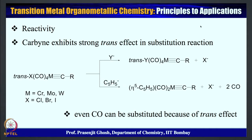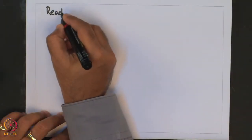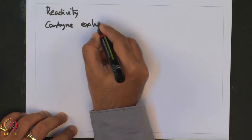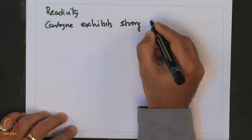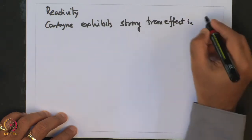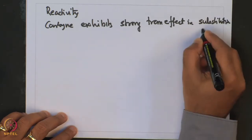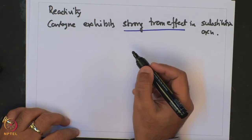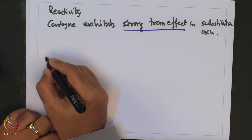Because of this, carbene exhibits extremely strong trans effects in substitution reactions. Trans effect means that a ligand attached trans to the carbene gets substituted during a substitution reaction, as the carbene itself is strongly bound to the transition metal through its three multiple bonds. Reactivity-wise, carbene exhibits a strong trans effect in substitution reactions: a ligand found disposed trans to the carbene moiety would get displaced.